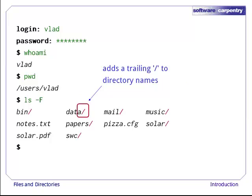As you can see, there are seven of these. The names without slashes, notes.txt, pizza.cfg, and solar.pdf, are plain old files.